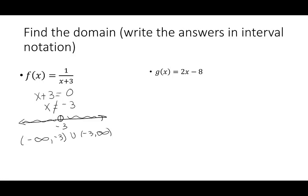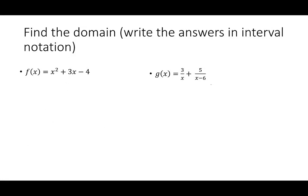The second one, I have g(x) = 2x - 8. I don't have a radical, I don't have a rational, which means the domain is negative infinity to infinity. I can put any number in, multiply by 2, subtract 8. Same kind of thing. Let's look at f(x) = x² + 3x - 4. No rational, no radical. The domain is negative infinity to infinity.